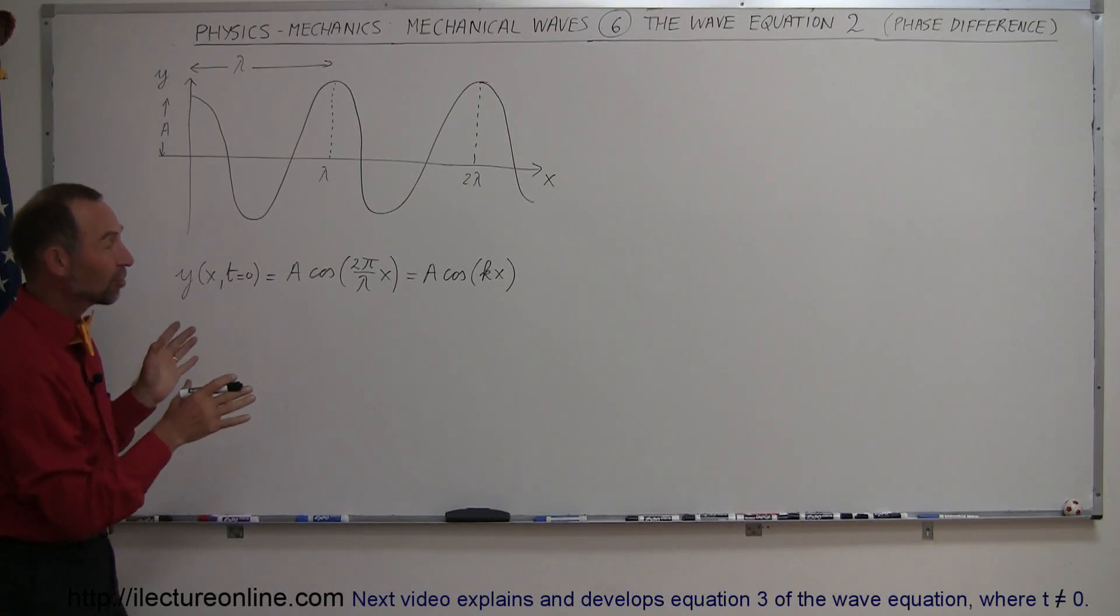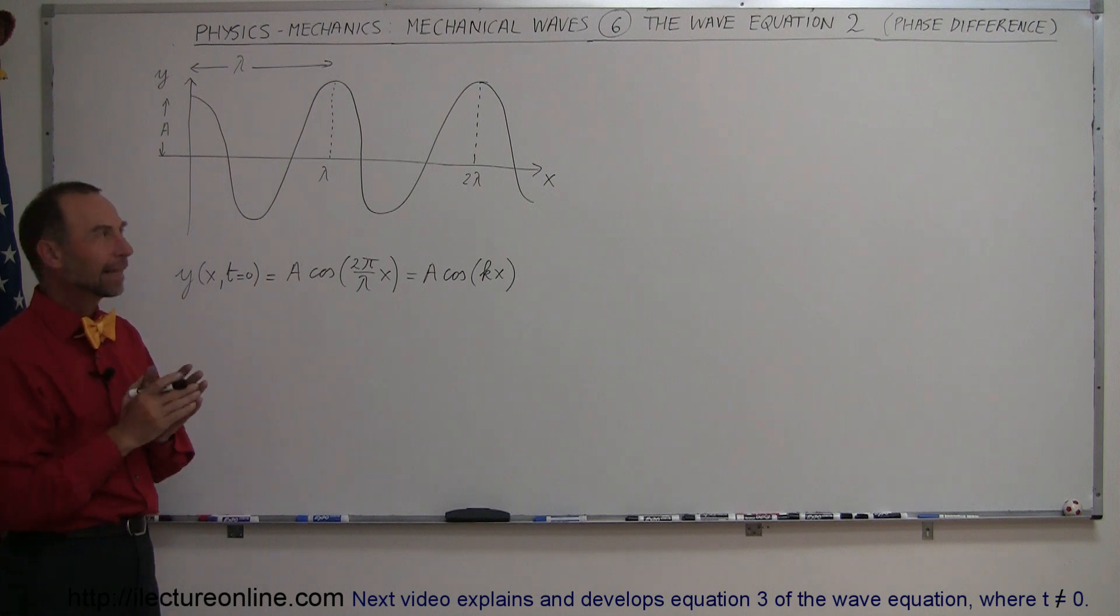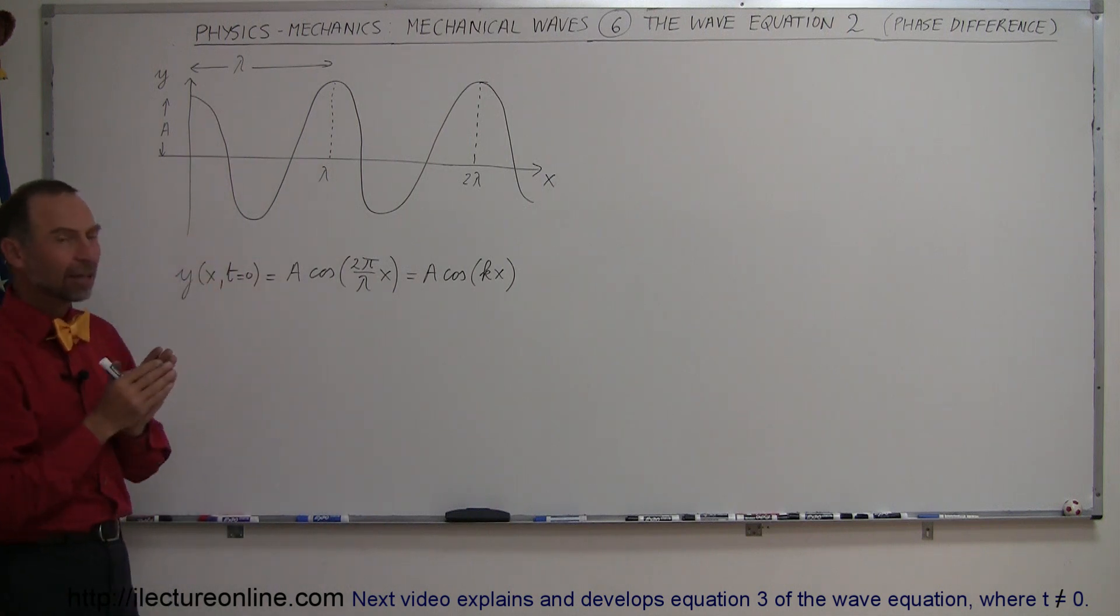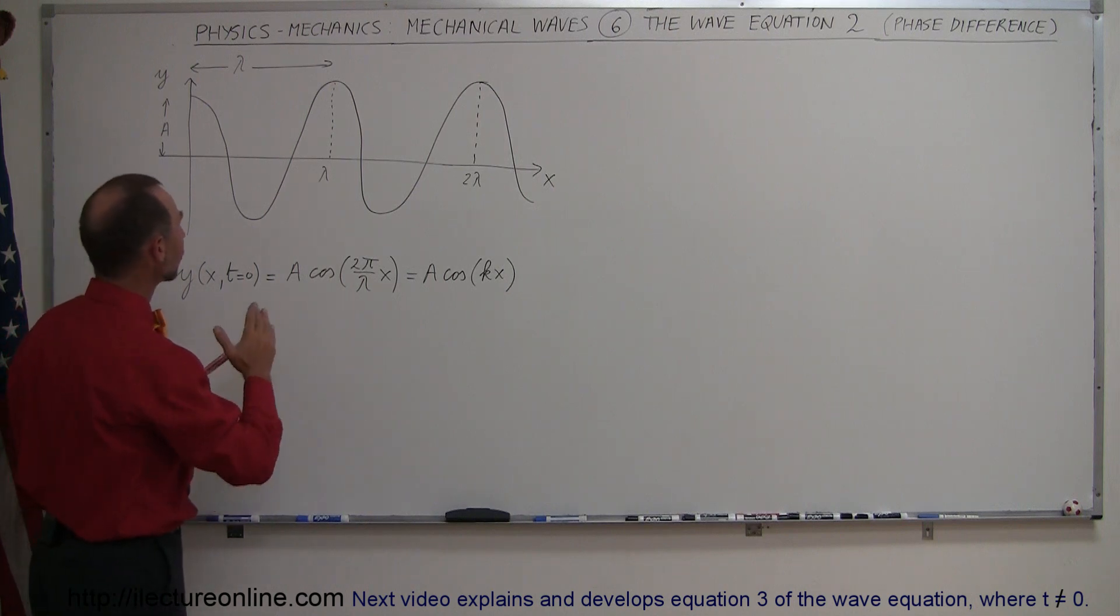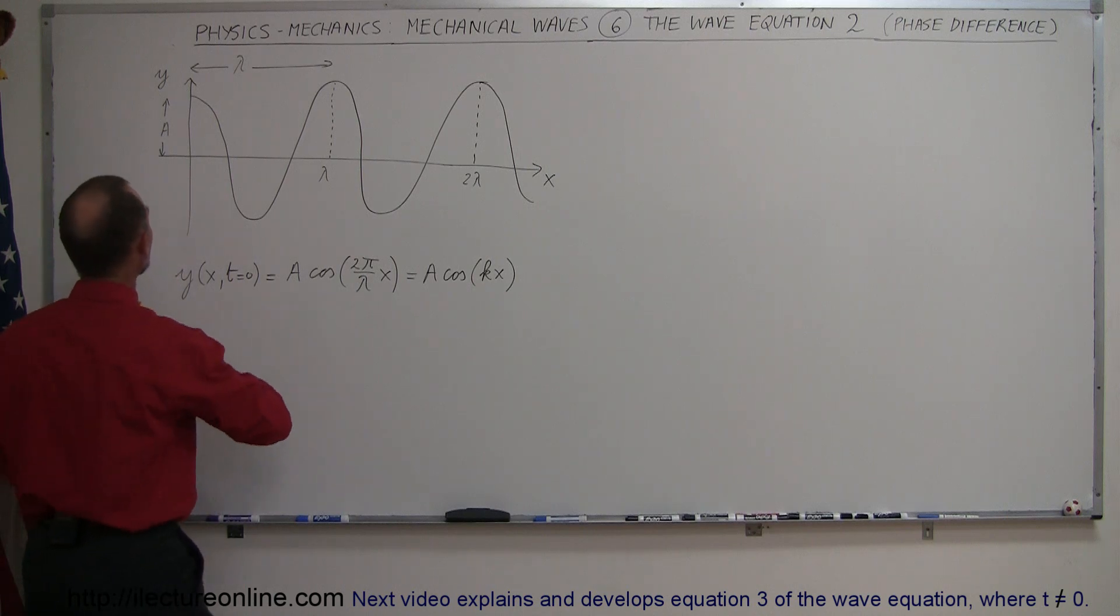Before we start developing the equation where we also take into account the time, let's first take a look at the equation of the wave where time is kept equal to zero, so the displacement y is simply a function of position x. Let's take a look at how a phase difference would make a difference in this equation. Let's say that we move the whole equation to the right by a factor of pi over 2, a quarter of a wave.